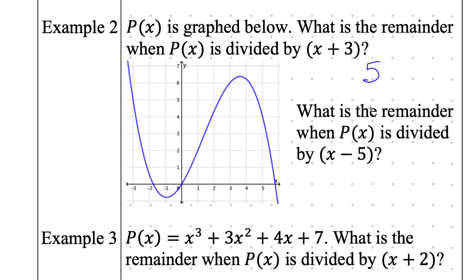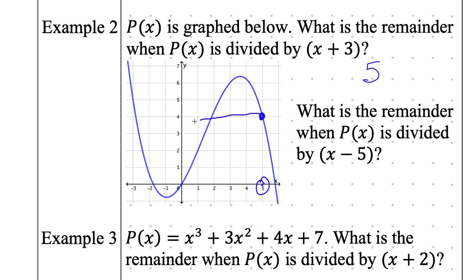What is the remainder when p of x is divided by x minus 5? If I have x minus 5, I plug in 5. And when I plug in 5, I get the value of 4. So when I plug in 5, I come up to this point and I see that height over here is 4. So the answer here is 4.